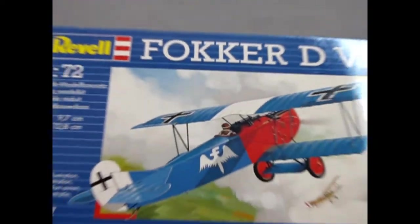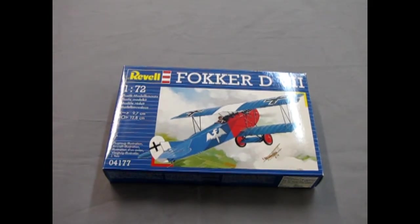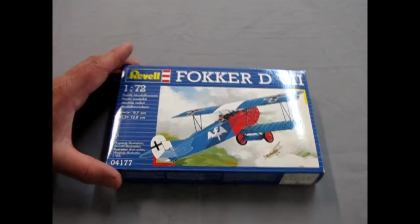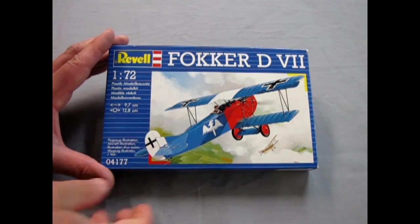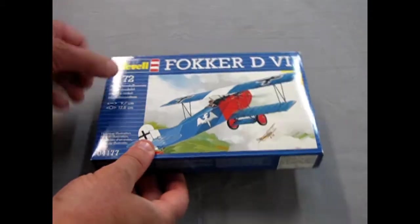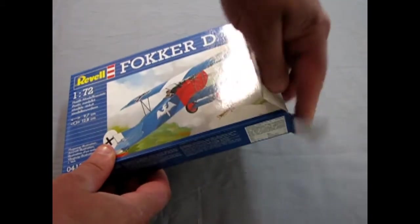Hello aviation fans and once again we're going to open up the lid on another 1/72nd scale World War I fighter. This time we are looking at Revell of Germany's Fokker D7 which was one of the most successful airplanes of World War I, especially on the German side.